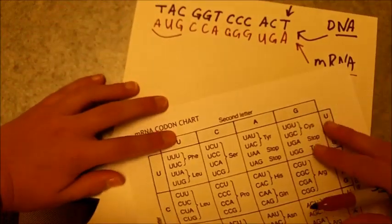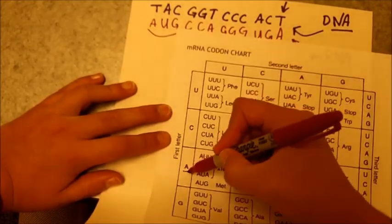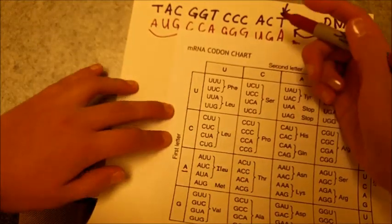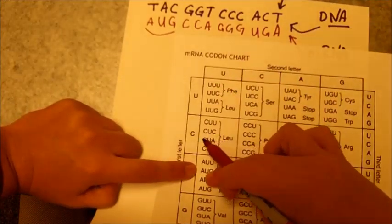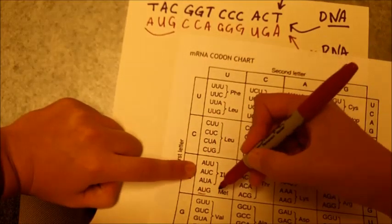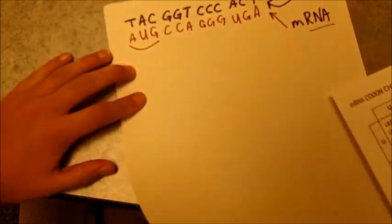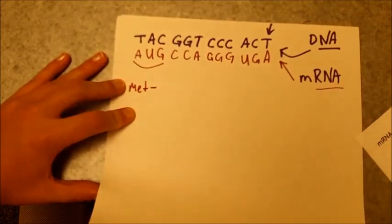So we start with our first one, A, U, G. So we go over here, find our first letter on our codon chart, A. Then we find our second letter up here. So stay in this box. Our second letter is U. And our third letter is G. So A, U, G, that codes for M, E, T, MET. So that is our first amino acid.